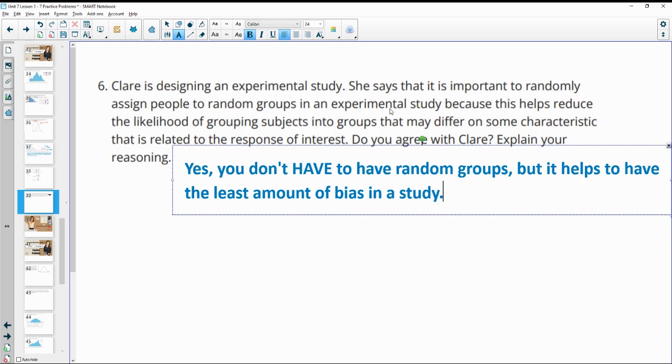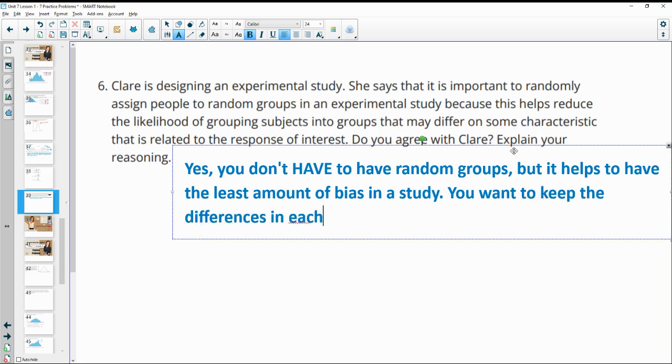If you put all of one characteristic in one group and none in the next, you might get different data. That characteristic or those differences might have impacted the study. So you want to keep the differences in each group so that they are not skewing the data or biasing the data.